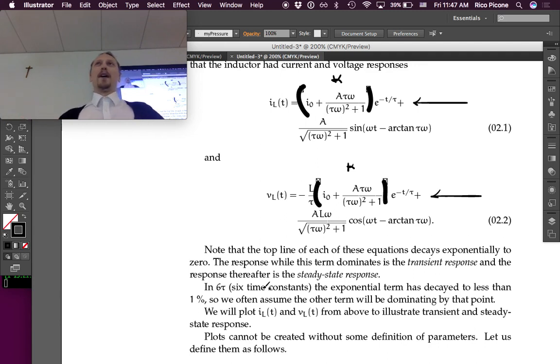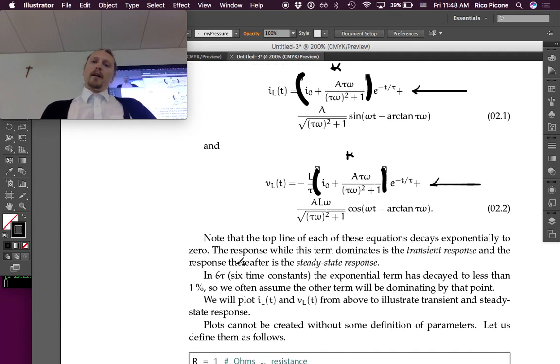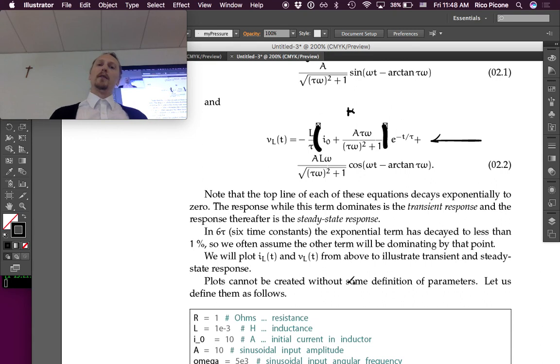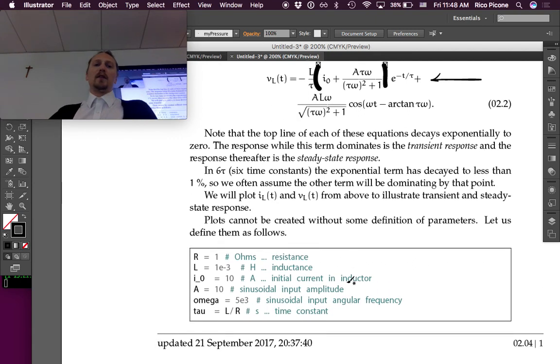Assuming you don't have some really small steady-state response, by six time constants at one percent of what the initial value was is usually small enough to assume that the other term is going to be dominating. At five or six time constants, you're within e to the negative six, which is like 0.002. Unless your amplitude of oscillation is really tiny, the sine wave should be totally dominating. We will plot the current and voltage from above, from those two equations, to illustrate the transient and steady-state response.